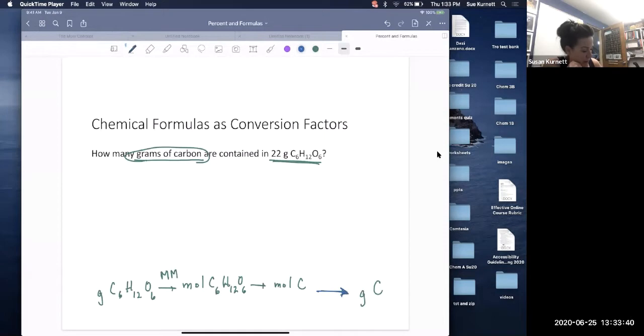To get from moles to grams, I use a different molar mass, the one just for carbon. And then to get from the whole to one kind of piece in there, I'm going to use the formula.